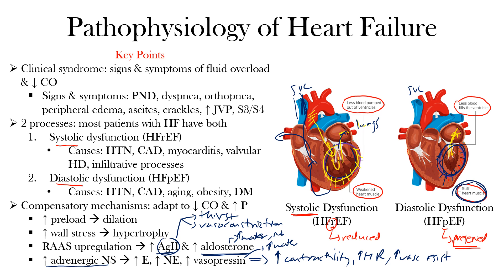Ultimately, this results in a cycle of slowly worsening left ventricular function with decreased forward flow and increased pulmonary and right-sided pressures — all of which lead to the heart failure signs and symptoms discussed: PND, dyspnea, orthopnea, peripheral edema, ascites, crackles, and so forth. Understanding these processes is important because when discussing therapy options, these are the mechanisms we target.